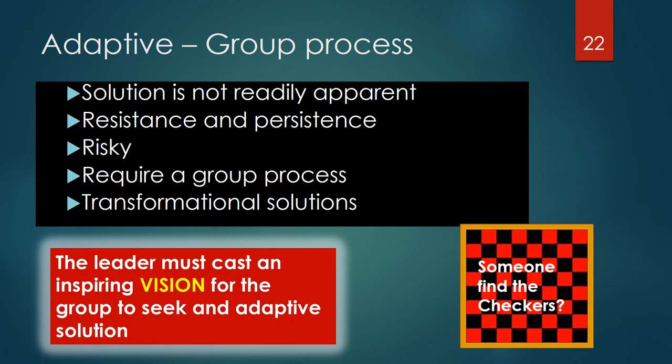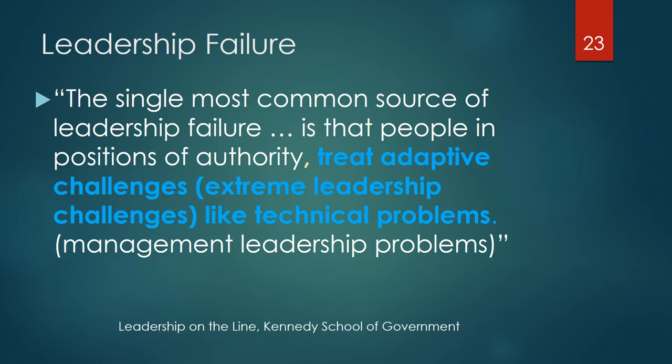Adaptive leadership is also defined as extreme or radical leadership. Effective leaders need both sets of skills and competencies — technical management skills and adaptive extreme group facilitation skills. According to Linsky and Heifetz in Leadership on the Line: the single most common source of leadership failure in politics, community life, business, or the nonprofit sector is that people — especially those in positions of authority — treat adaptive challenges like technical problems. In other words, they try to manage their way out of situations that require group process. Understanding the difference between technical and adaptive skills, and when to use them, is critical for effective leaders of any organization.